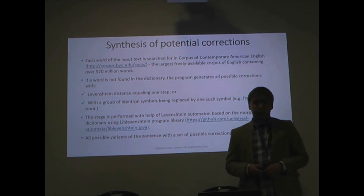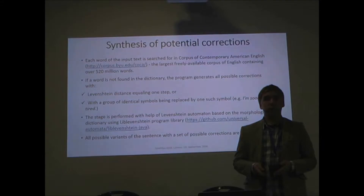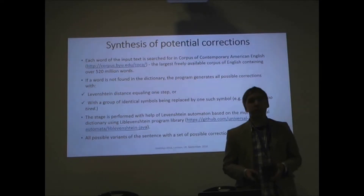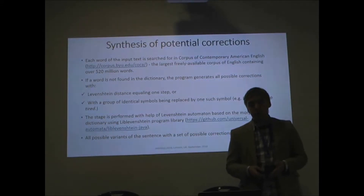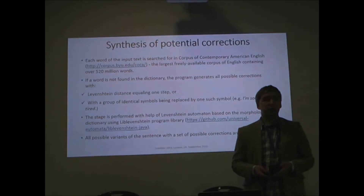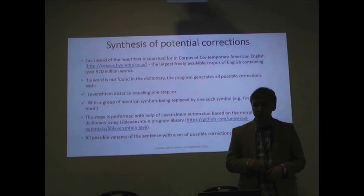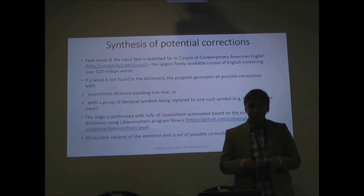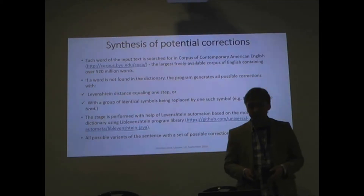The next step is synthesis of potential corrections. We need to find each word of the input text in the corpus of contemporary American English. If a word is not found in the dictionary, the program generates all possible corrections using the Levenshtein automaton. One heuristic we apply is to replace a group of identical symbols with one such symbol.